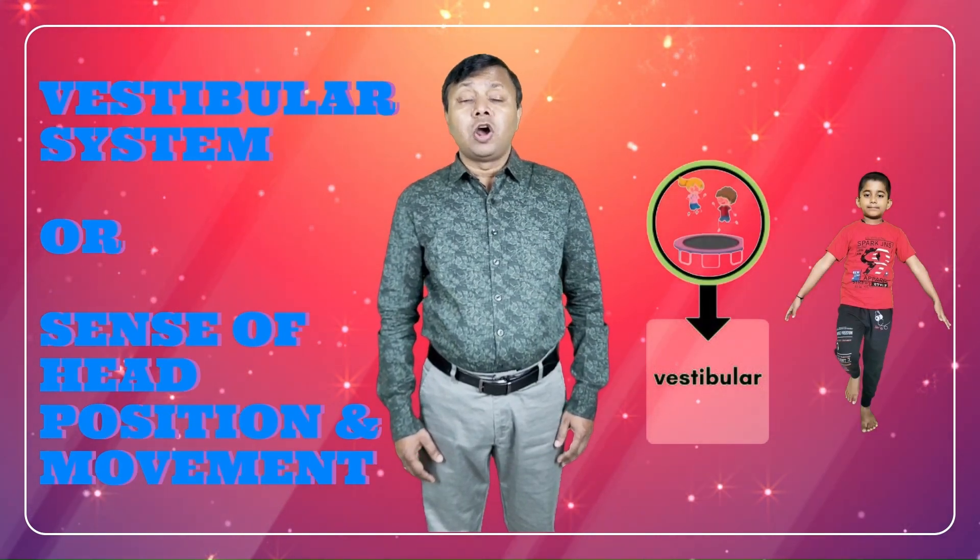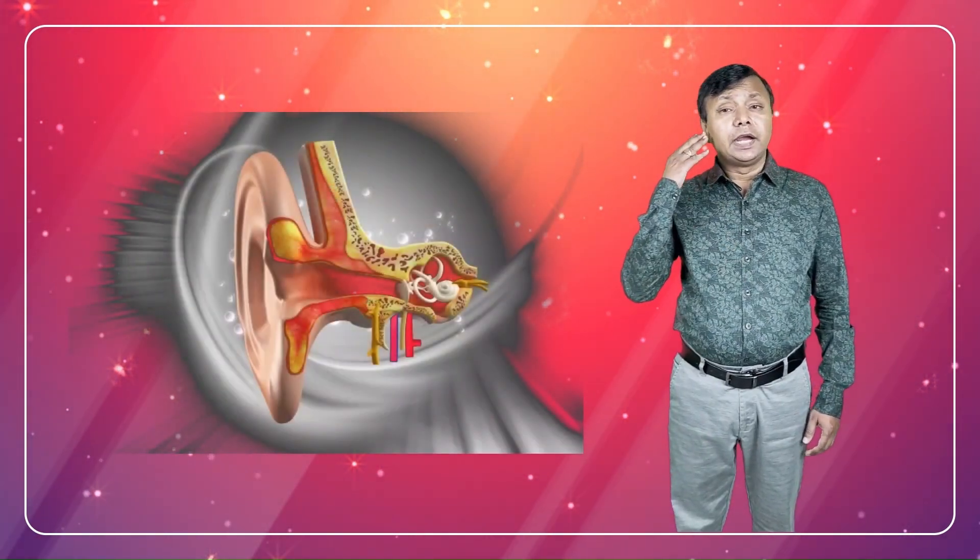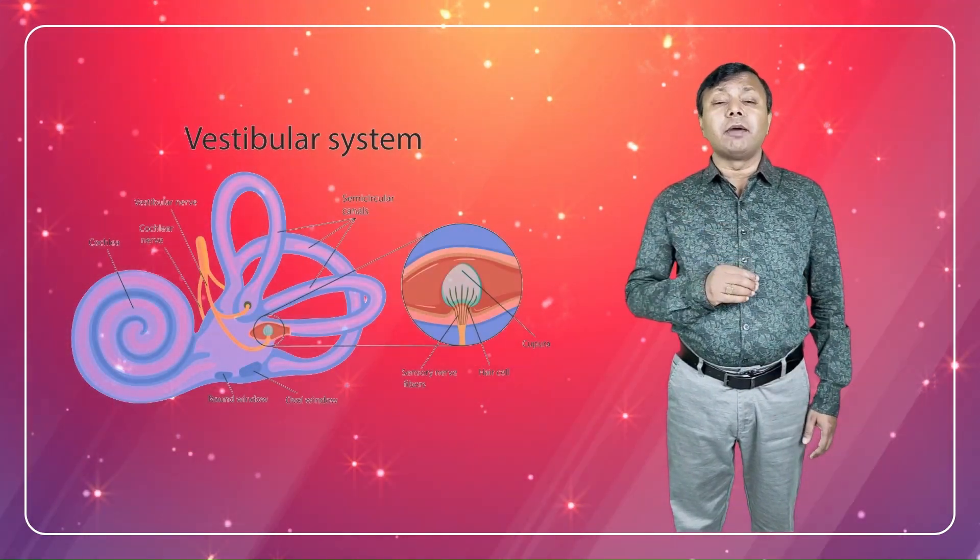Vestibular system, or sense of head position and movement. Located in our inner ear, our vestibular system provides information about movement, balance and our relationship to gravity. It lets us know if we are right side up or upside down. It also communicates if we are moving or still, as well as how quickly and in what direction we are moving. Vestibular input contributes to our sense of body position in space, posture and muscle tone, the maintenance of a stable visual field, bilateral coordination and a sense of equilibrium.